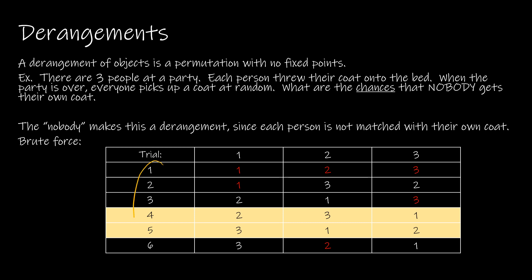We can see there are a total of six trials, which makes sense because the first person has three choices of a hat, the second person has two choices, and the third person has whichever is left. So there's a total of six different ways or six different trials.